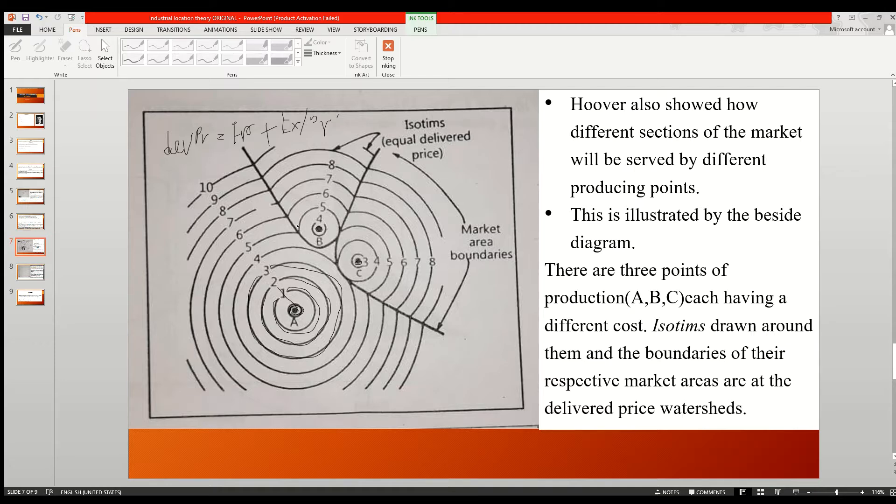Then they will organize around the market areas in circular patterns, and they will coincide with the market areas with A. By this they will form a watershed of delivered prices.